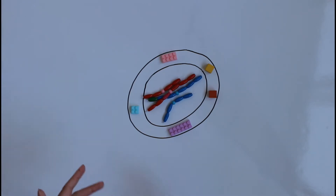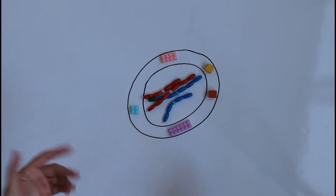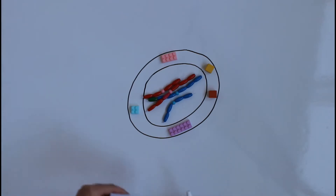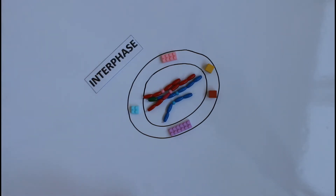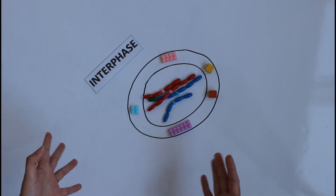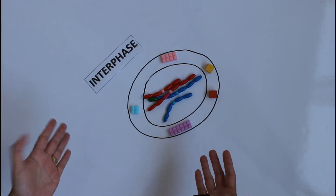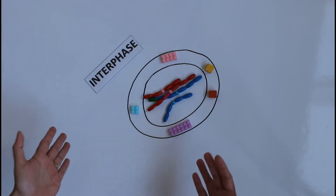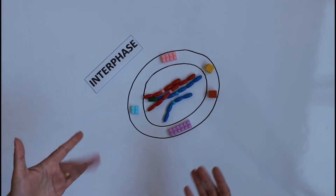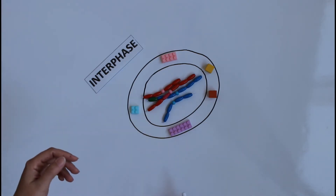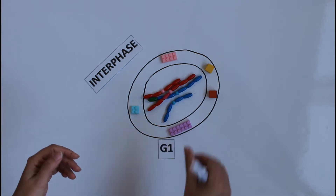First, we need to remember the process of cell division. We have interphase, which is the preparation of the cell for division. Before I start mitosis, I need to go through interphase. Interphase is the preparation phase — it's actually a very long phase that takes more time than mitosis itself. The three phases of interphase are G1, S, and G2.